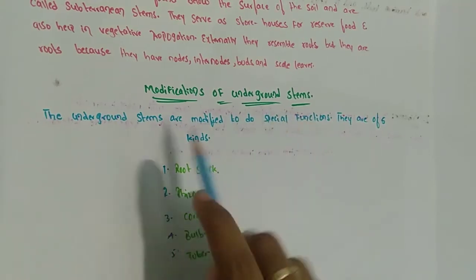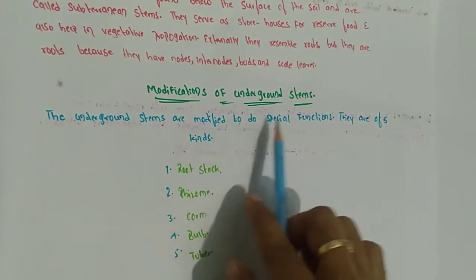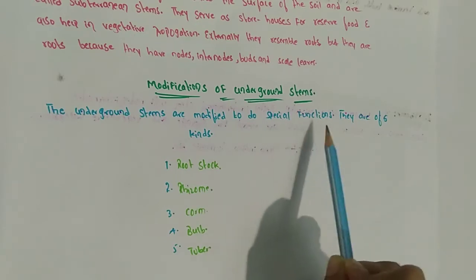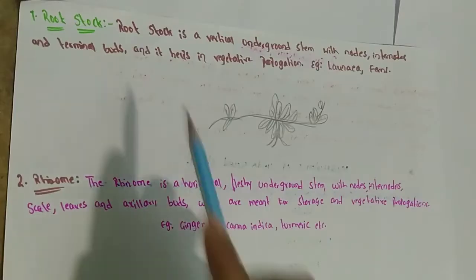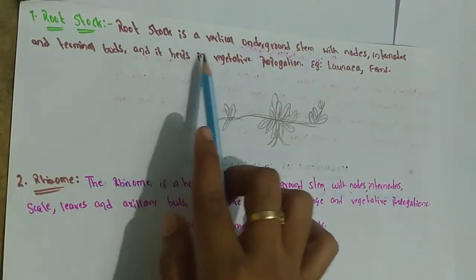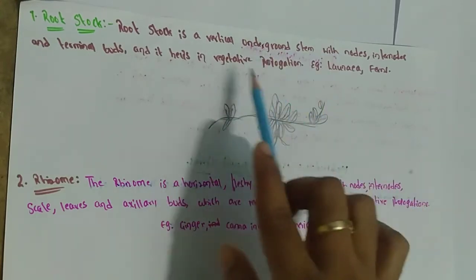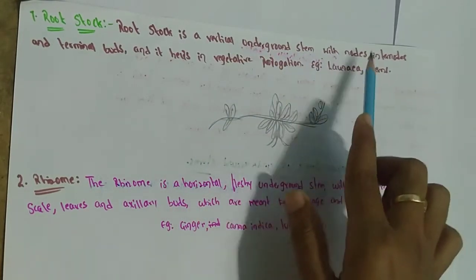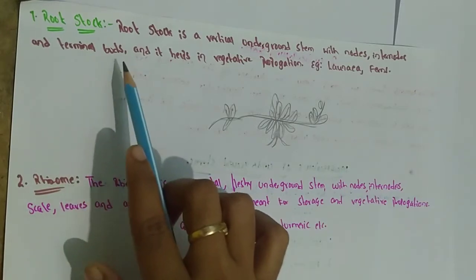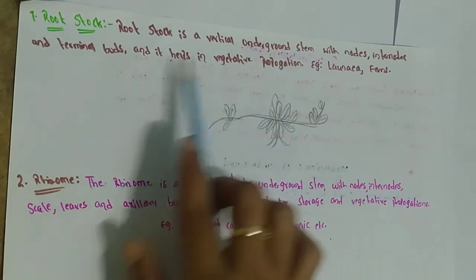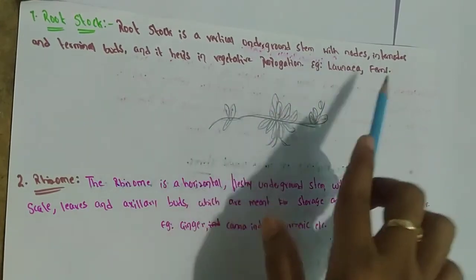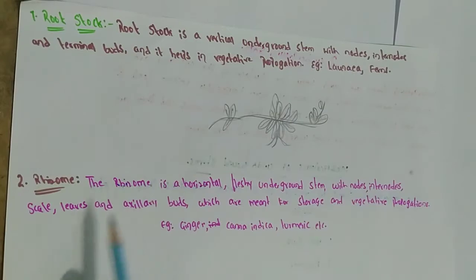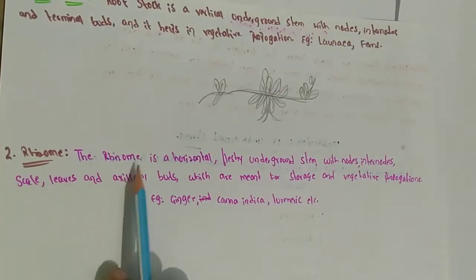The underground stems are modified for special functions. There are five kinds: rootstock, rhizome, corm, bulb, and tuber. The first is rootstock, which is a vertical underground stem with nodes, internodes, and terminal buds. It helps in vegetative propagation. Examples are Lounia and ferns.